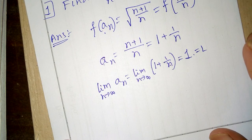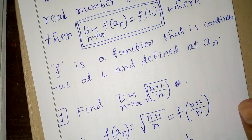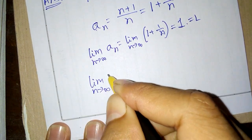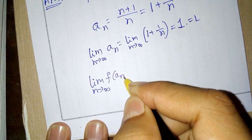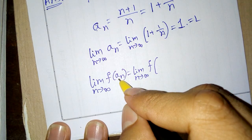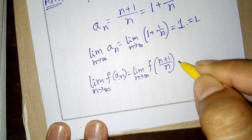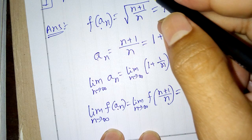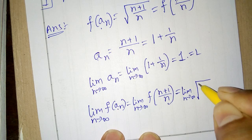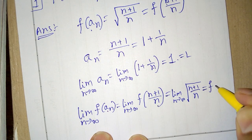By the theorem, the limit as n tends to infinity of f(An) is equal to f(L). The limit as n tends to infinity of f(An) means the limit as n tends to infinity of f of (n plus 1) divided by n, which equals f(L). Since L is 1, this equals f(1).